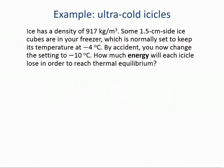Here's an example. Ice has a density of 917 kilograms per cubic meter. Some 1.5 centimeter side ice cubes are in your freezer, which is normally set to keep its temperature at negative 4 Celsius. By accident, you change the setting to negative 10 Celsius. How much energy will each ice cube lose in order to reach thermal equilibrium? The heat will be lost to the freezer. We are not directly given the mass of ice, so we'll have to find that.